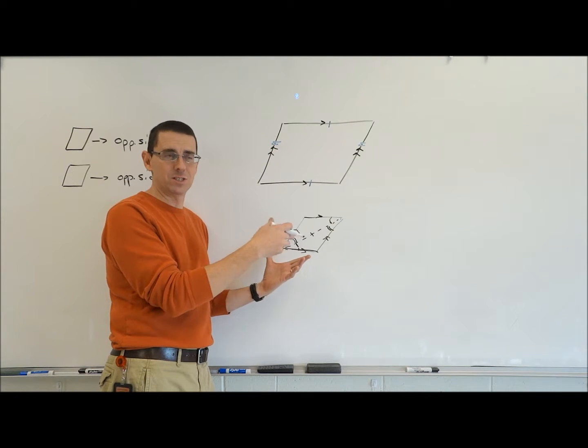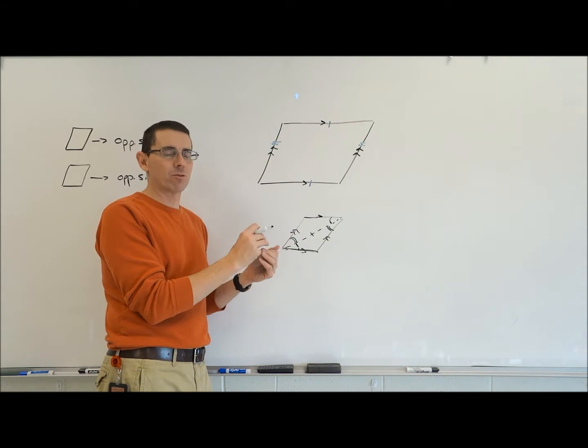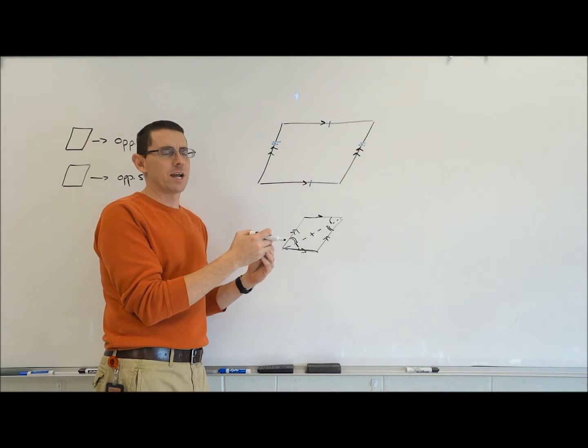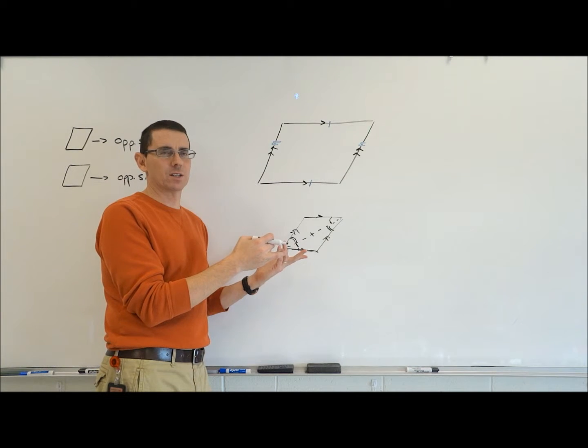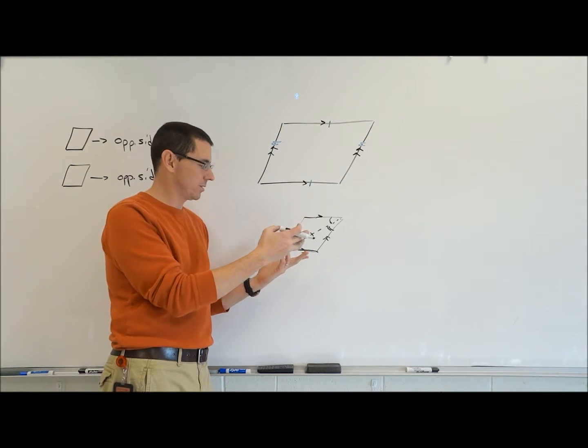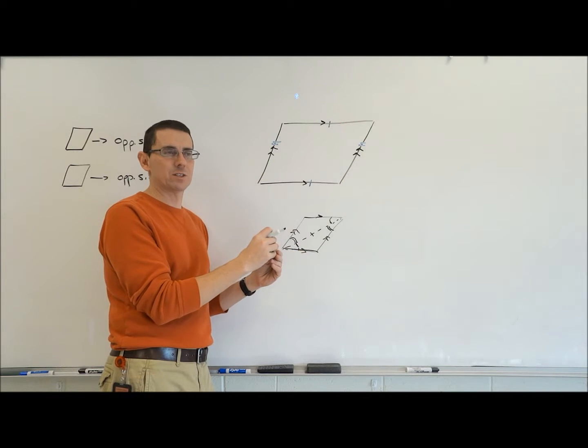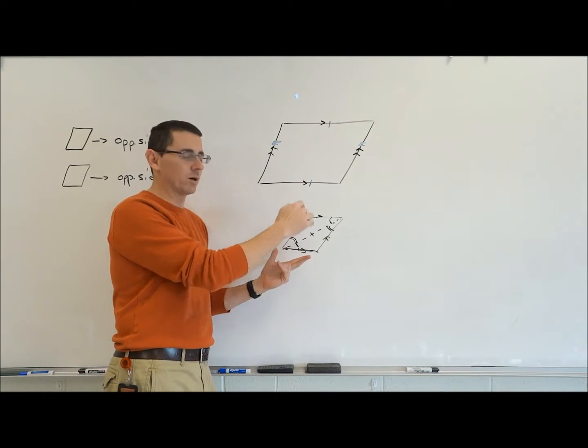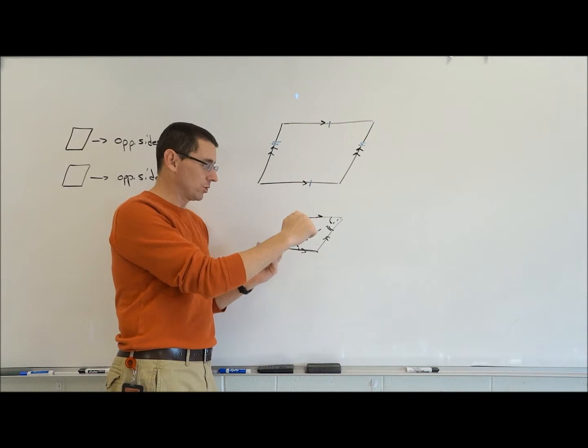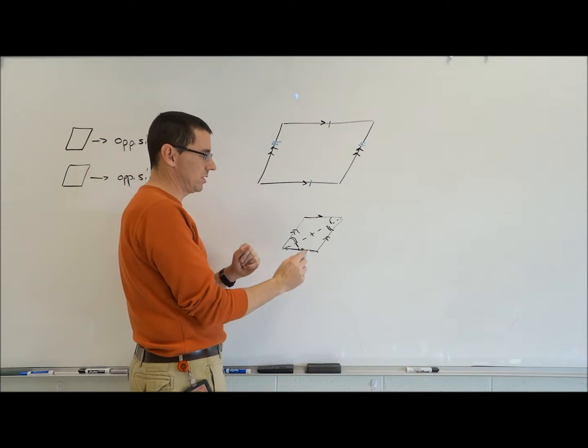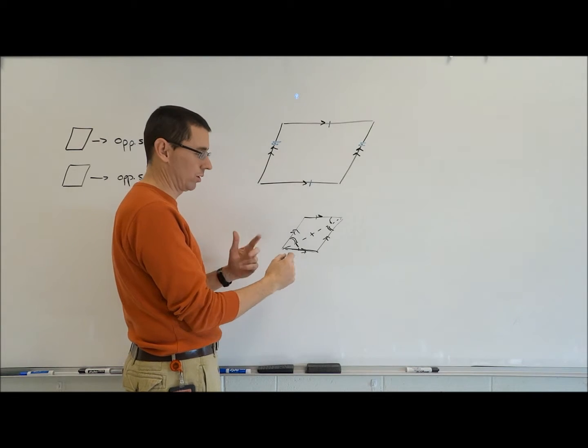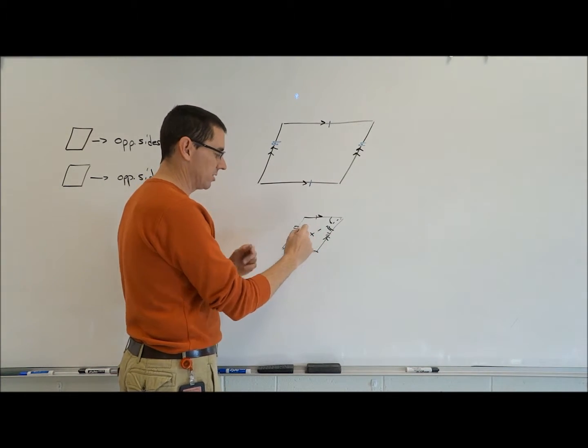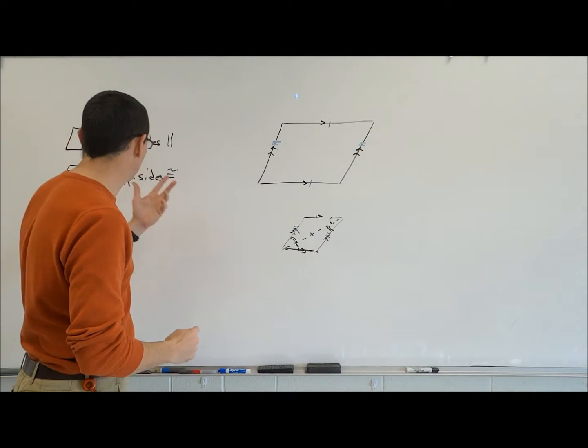CPCTC. So, CPCTC, again, was that acronym. I can't really say it's an acronym because it's not a word, right? I don't know what it says, but CPCTC stands for corresponding parts of congruent triangles are congruent. The types of parts a triangle has are angles and sides. So, we'd be able to use CPCTC to say, all right, this side and this side are congruent to one another because they correspond. This side and this side are congruent to one another because they correspond.